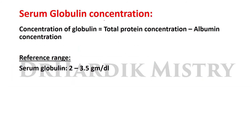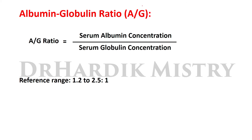Serum globulin concentration is obtained as: concentration of globulin = total protein concentration minus albumin concentration. The reference range for serum globulin concentration is 2 to 3.5 gram per dL. One important ratio is the albumin-globulin (A/G) ratio: A/G ratio = serum albumin concentration divided by serum globulin concentration. The reference range for A/G ratio is 1.2 to 2.5:1.